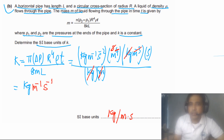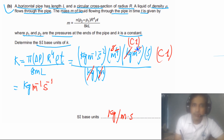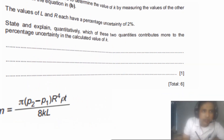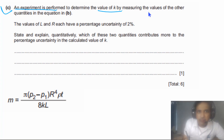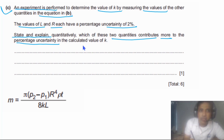This question has 3 marks. You will get one C mark for writing the individual units correctly, another C mark for correctly writing the units for density, and the last mark is the answer mark if you have obtained the correct final answer. Part C says an experiment is performed to determine the value of K by measuring the other quantities in the equation from part B. The values of L and R each have a percentage uncertainty of 2%. State and explain quantitatively which of these two quantities contributes more to the percentage uncertainty in the calculated value of K.